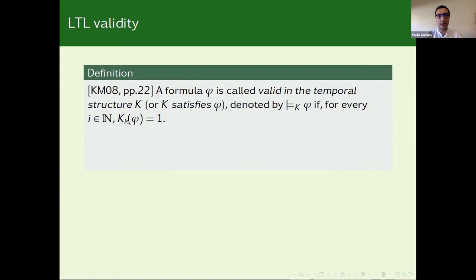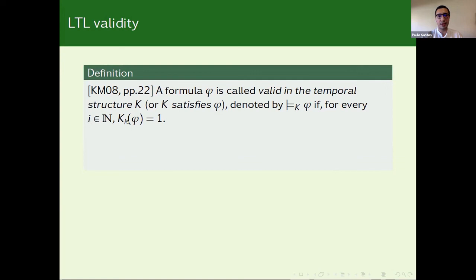A formula is said to be valid in a temporal structure and it is denoted in this way if for every value I, K_I(phi) is one. And phi is called a consequence of a set S of formulas. And it is denoted in this way if for every possible K, this holds whenever this holds for every formula in S. And as usual, phi is said to be valid and it is denoted in this way if it is a consequence of the empty set.